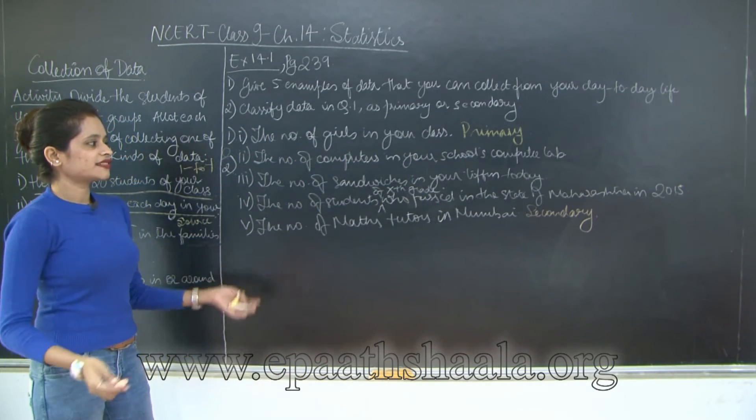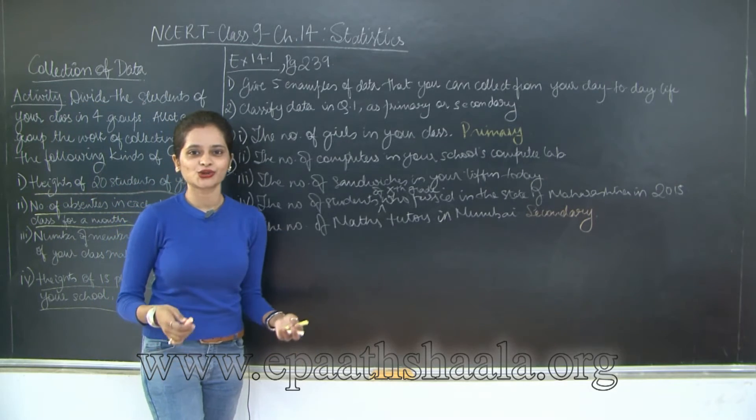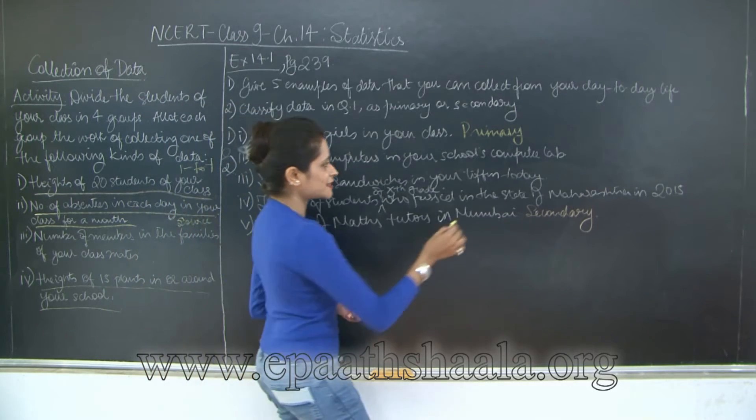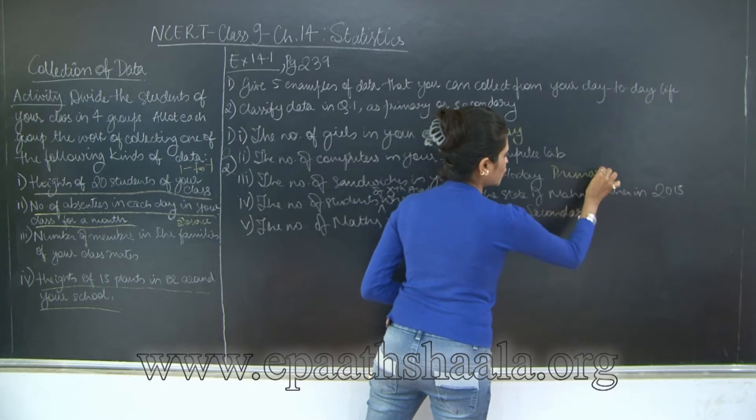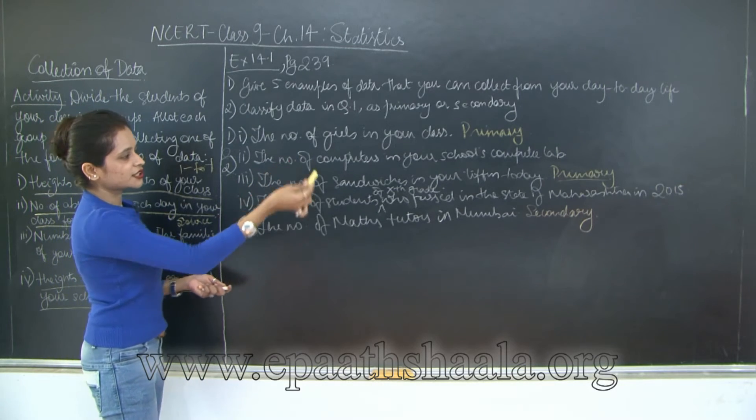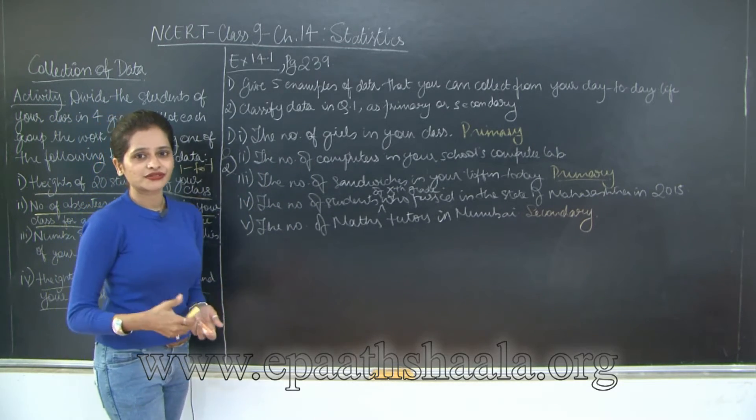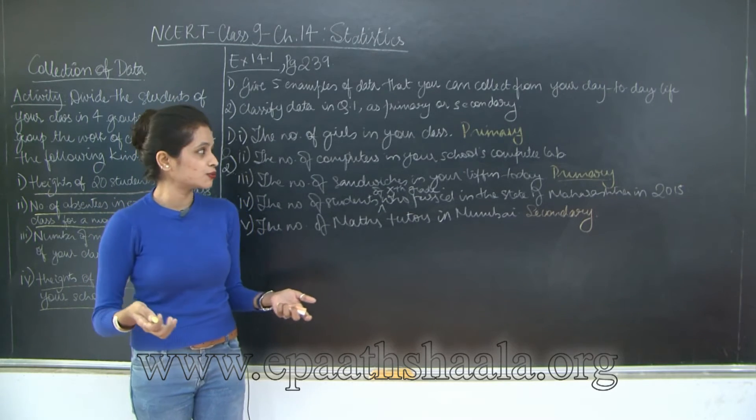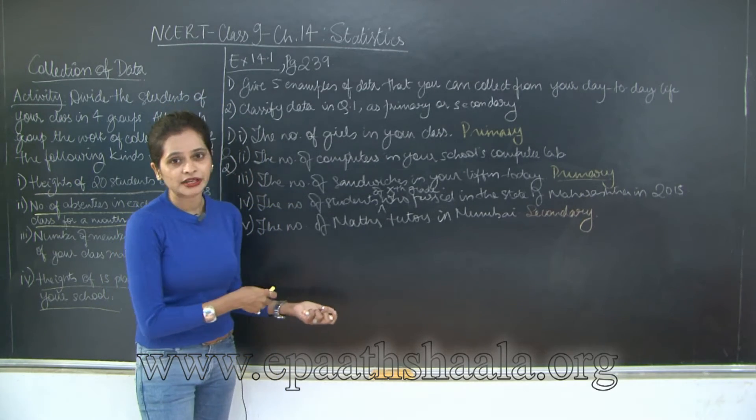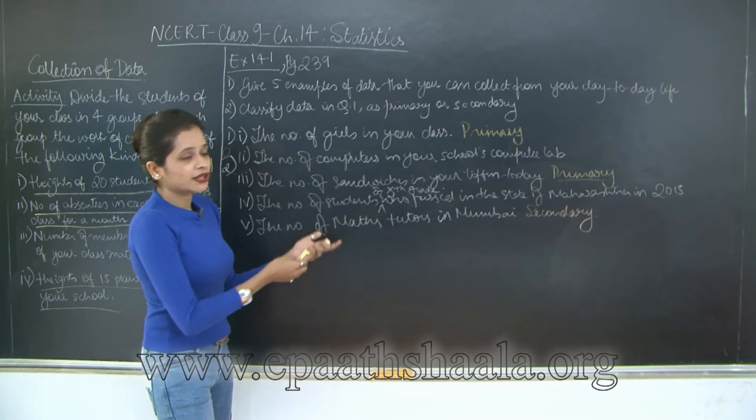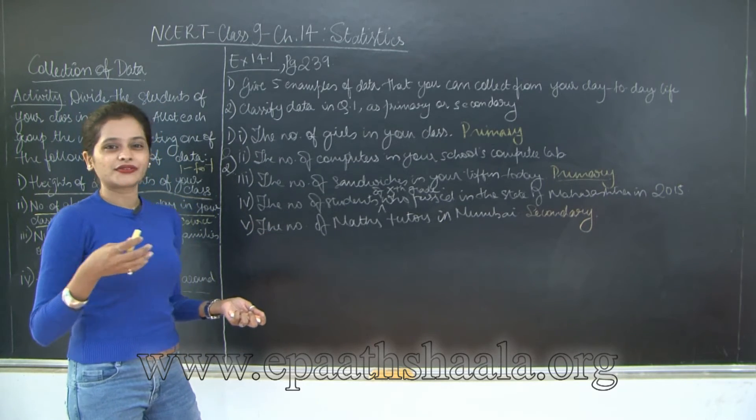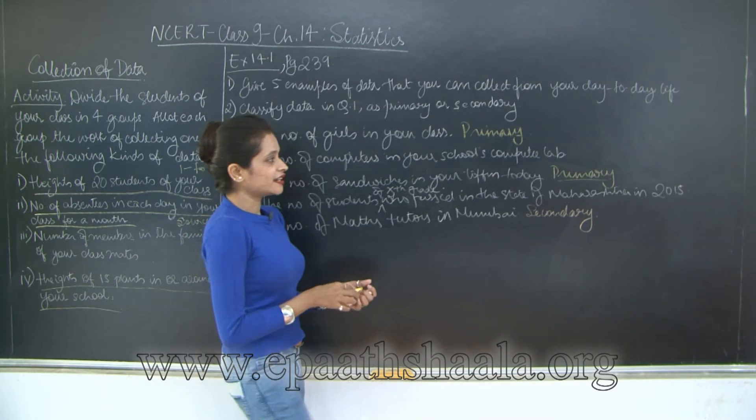Let's take a look at this one: the number of sandwiches in your tiffin today. What you have to do is just open your tiffin. I know the smell is going to lure you, but do not eat it during class hours. This is going to be primary data because you are going to check this information personally. The number of computers in your school's computer lab - again, you just have to go to the computer lab. There aren't many labs, there's just one computer lab in schools, usually. If you are in the primary or secondary section, you can go to the computer lab and just count the number of computers. There are a minimum of 15 to 20, not more than that, I am assuming. So this is going to be again primary.